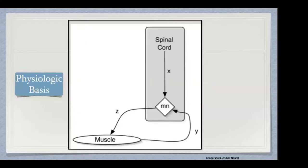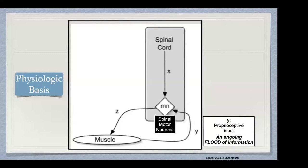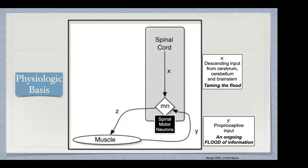The physiologic basis of selective dorsal rhizotomy — here's a circuit. These are the spinal motor neurons hanging out down in the lumbar spine. Y represents the proprioceptive input from the legs, and this is an ongoing flood of information. All the muscles and joints in your body are consistently giving your brain an update on where they are and what they're doing. To manage that information, to tame that flood, you have to have descending input from the cerebrum, the cerebellum, and even the brainstem to modulate that information, or it gets a bit out of hand.